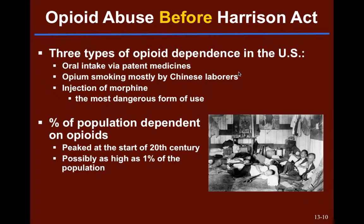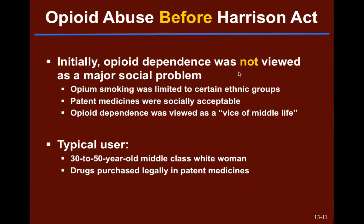If we look at how much of the population was dependent — not just using, but dependent — the peak was really at the beginning of the 20th century, and it could have been as high as 1% of the population. Fairly widespread, definitely the highest rates of opioid dependence we've reported. At this time, opioid dependence wasn't really seen as a major social problem. Smoking of opioids was a bit frowned upon, mostly because of the ethnic groups it was associated with — those immigrant laborers. But opium consumption in patent medicines was very acceptable socially. Our typical user at this time was a 30- to 50-year-old middle-class white woman who purchased drugs legally through patent medication.